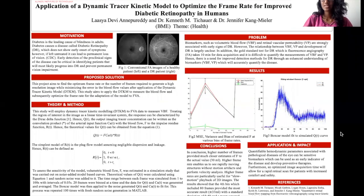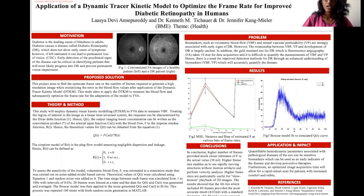Hello, everybody. My name is Lasya, and today I will be talking a little bit about my research in diabetic retinopathy. Diabetic retinopathy is caused because of diabetes, and it is one of the leading causes of blindness in adults. Diabetic retinopathy doesn't show any early onset of symptoms, and if it is left untreated, it can lead to permanent loss of vision.